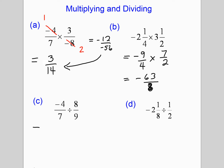For part C, remember that when dividing fractions you multiply by the reciprocal. So the division becomes multiplication and the reciprocal is 9 over 8. We can cancel: 4 goes into 4 once and 4 goes into 8 twice. A negative times a positive gives a negative answer: negative 9 over 14. If you prefer, you can multiply the tops directly to get negative 36 over 56 and then simplify.